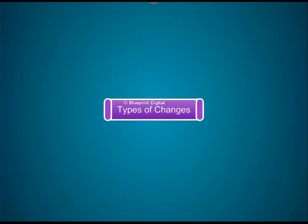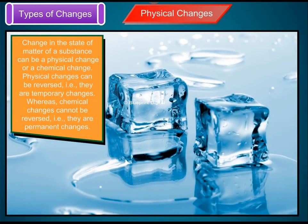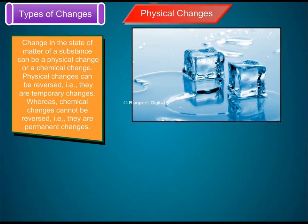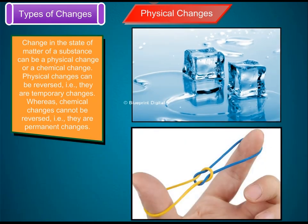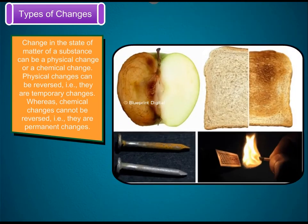Types of changes. Physical changes. Change in the state of matter of a substance can be a physical change or a chemical change. Physical changes can be reversed — that is, they are temporary changes. Whereas chemical changes cannot be reversed — that is, they are permanent changes.